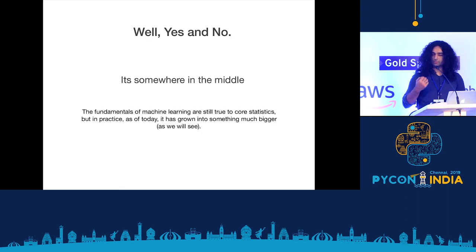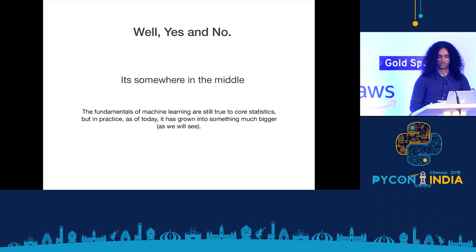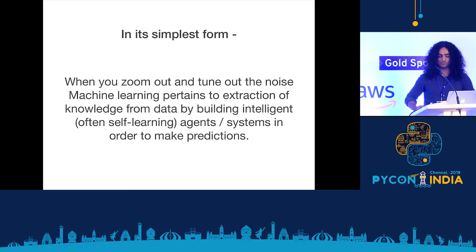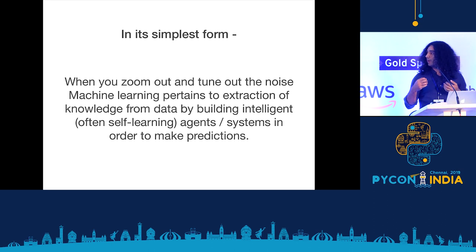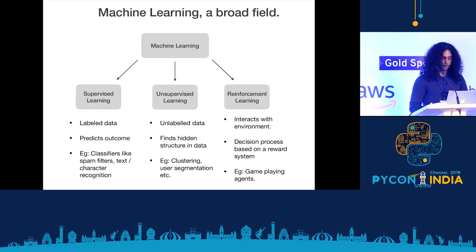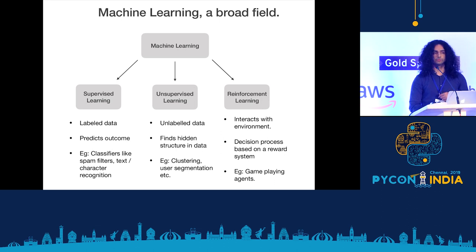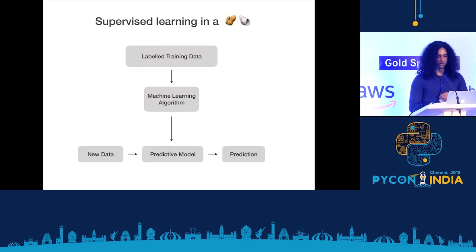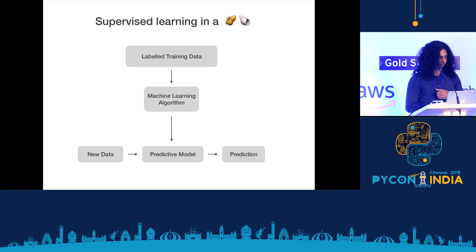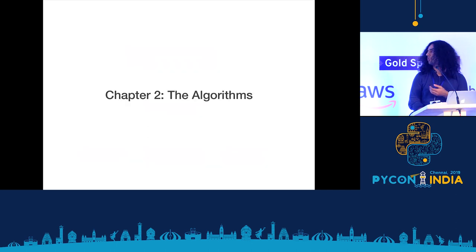Well, it's somewhere in the middle. The fundamentals of ML are still true to core statistics, but in practice today it has grown into something much bigger. In its simplest form, when you zoom out and tune out all the noise, machine learning pertains to extraction of knowledge from data by building intelligent agents, which are often self-learning, in order to make predictions. We'll just be talking about the supervised learning part of the field in this talk. In supervised learning, we have labelled data, we give it to our ML algorithm, which gives us a predictive model, and we can make predictions on new data.